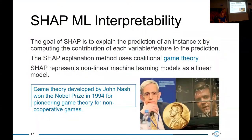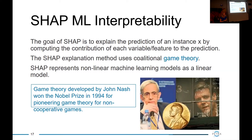SHAP — SHapley Additive exPlanations — computes the contribution of each variable to a prediction by computing a linear model at a very complex machine learning model, using game theory. A fun fact: game theory was developed by John Nash, who won the Nobel Prize in 1994 — the subject of the film 'A Beautiful Mind.' This is an interesting merging of data science and economic mathematics.